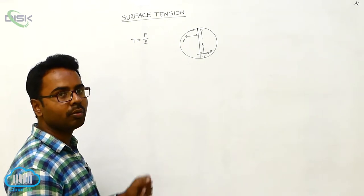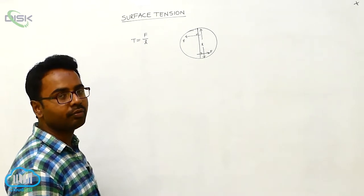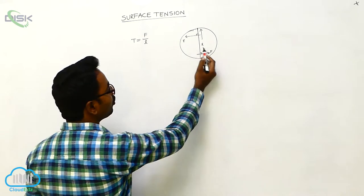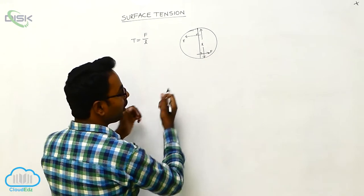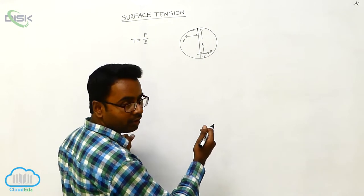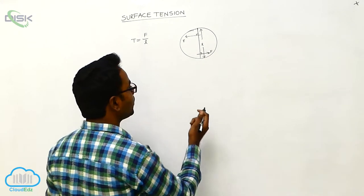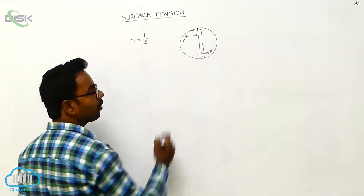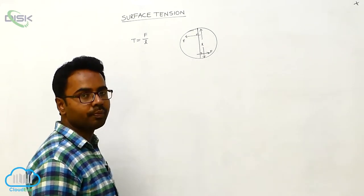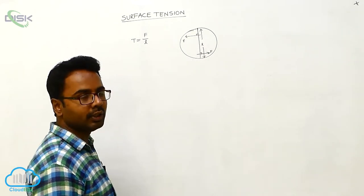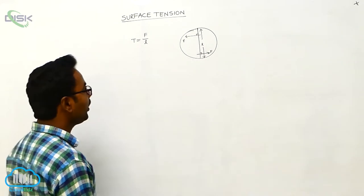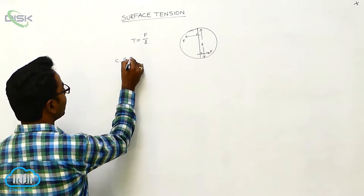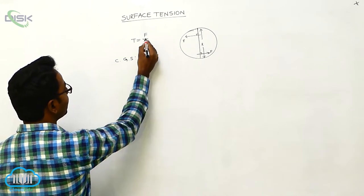The formula is T equals F by L, where F is the force with which the two parts are pulling each other in opposite directions, and L is the length of the imaginary line drawn on the free surface of the liquid. The CGS unit of surface tension is dyne per centimeter.